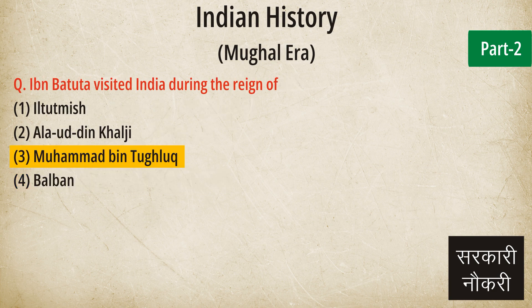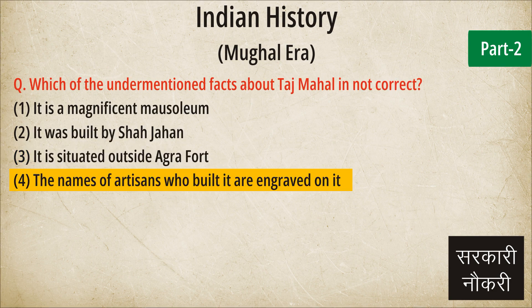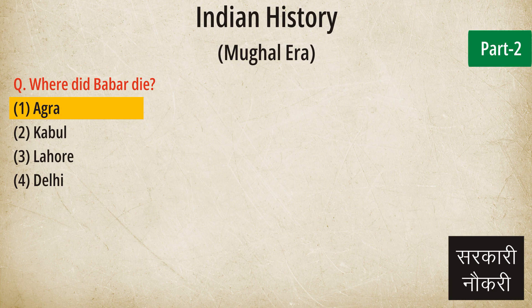Question: Ibn Battuta visited India during the reign of. Answer: Muhammad bin Tughlaq. Question: Which of the undermentioned facts about Taj Mahal is not correct? Answer: The names of artisans who built it are engraved on it. Question: Where did Babur die? Answer: Agra.